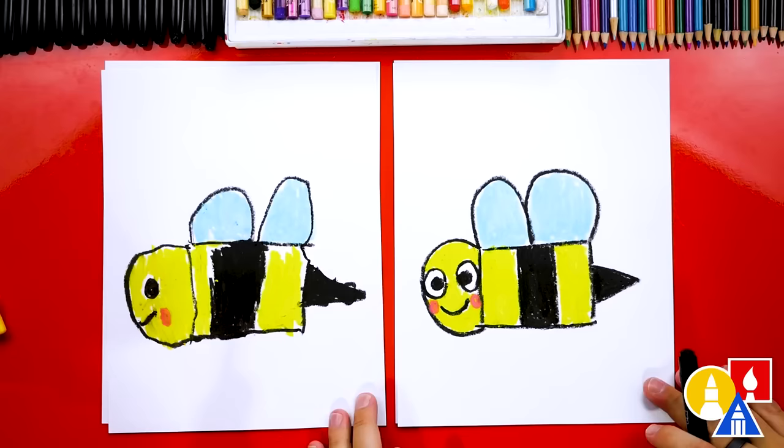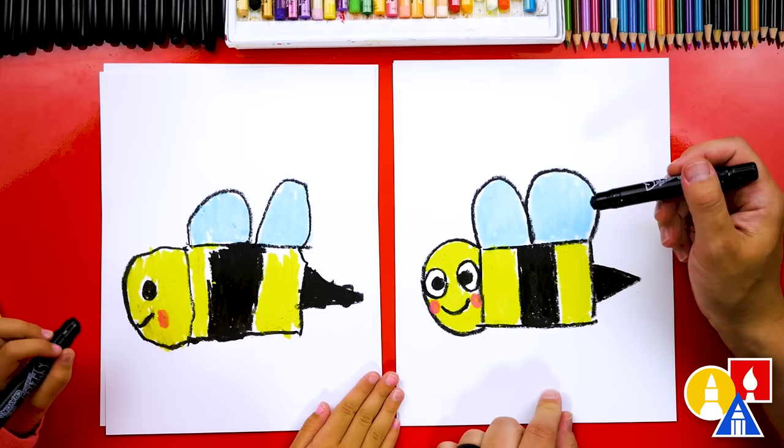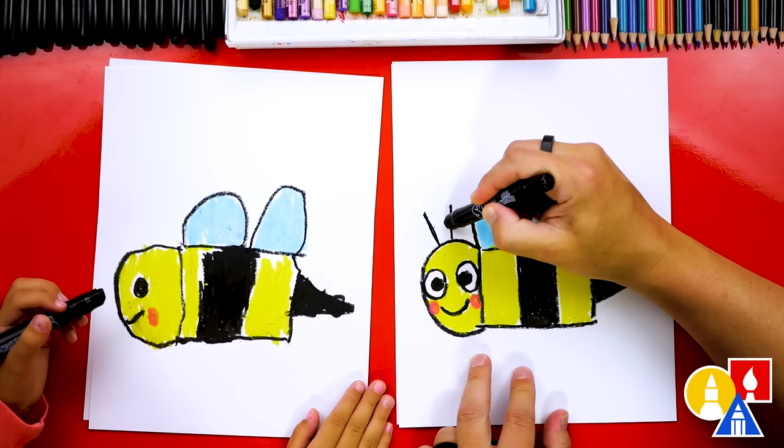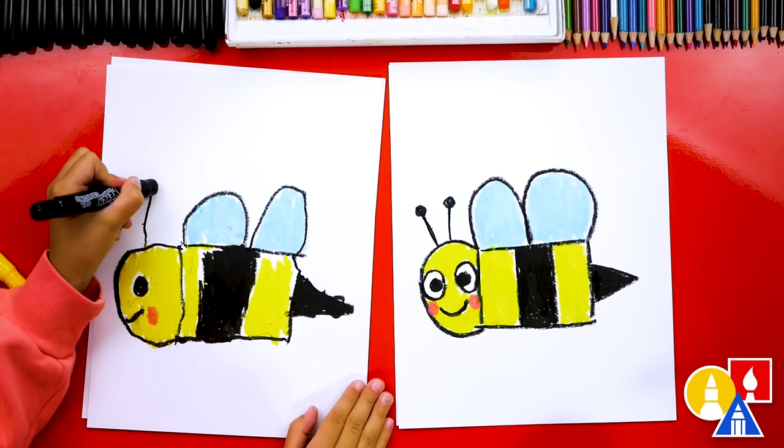We did it. We finished coloring our bee yellow. We also added blue to the wings and we used pink for the cheeks. But what is our bee missing? Antennas. So let's switch back to our black. I'm going to draw two lines that stick out of my bee's head like this. And then maybe at the top we can add a little circle for the top of the antenna. There's one and another one.